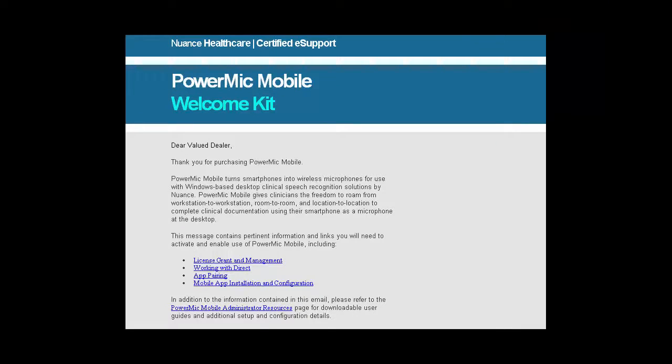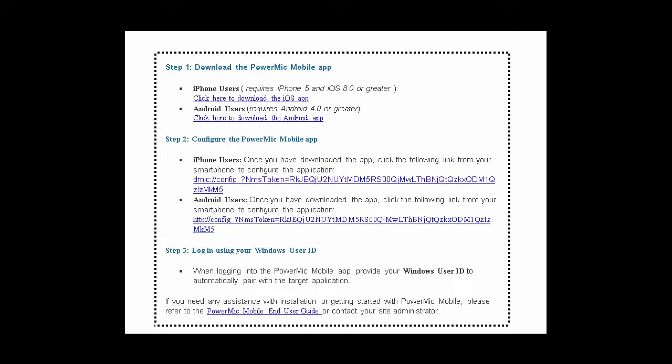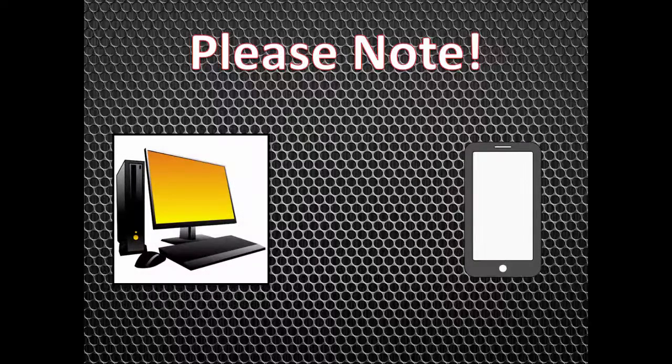First let's take a look at the welcome letter you received in your email. It contains instructions for app pairing and configuration, in addition to a download link for the PowerMic Mobile app and a configuration link that must be opened from your phone. Please note we will be performing most of the following steps from your phone. If you have not already, we recommend you forward the welcome kit email to an email account you can access from your smartphone.